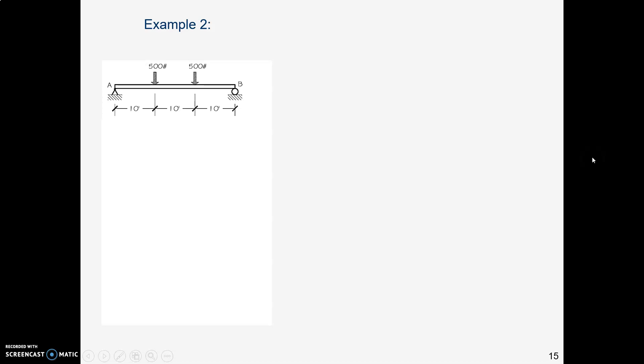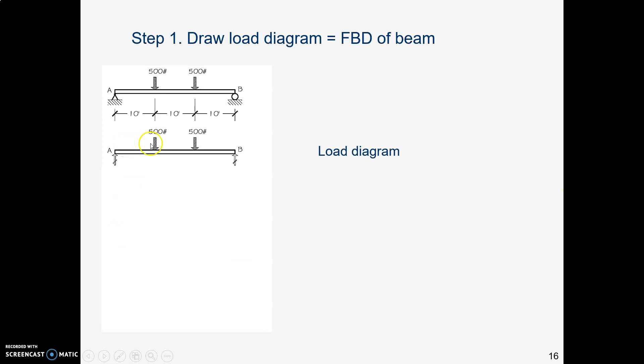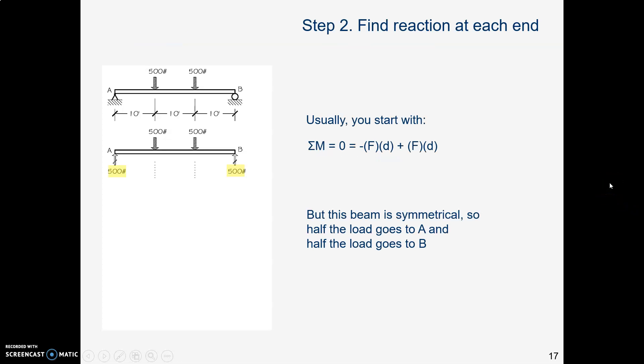Let's look at a different example. Here's one that has two loads on it. That's very common. First we'll draw the load diagram right under the picture of the beam. Then we'll find the reaction at each end. We could figure out these reactions our usual way, which is to start with sum of all moments equals zero. Force times distance, force times distance, force times distance. But this beam is also symmetrical. The loads are equally arranged. They're equal distant from each end of the beam. So the loads add up to 1,000 pounds. Half of it will go on each end.